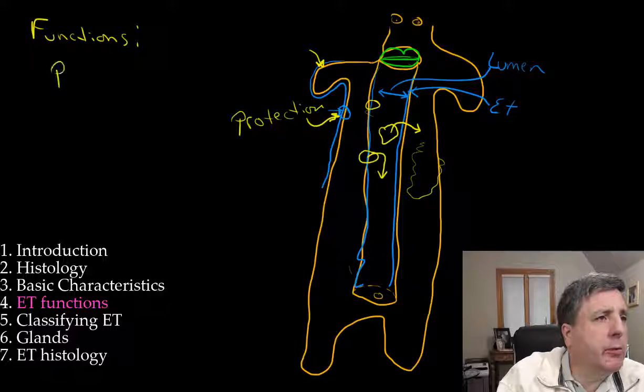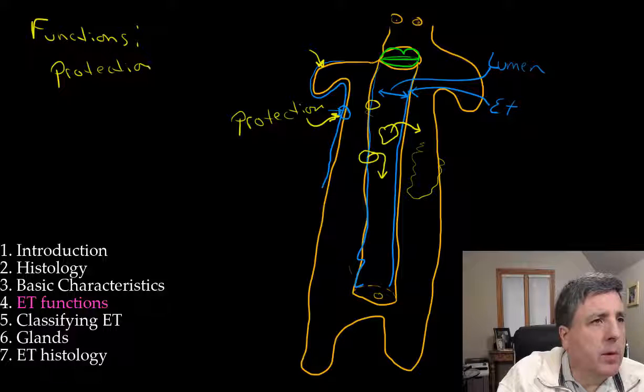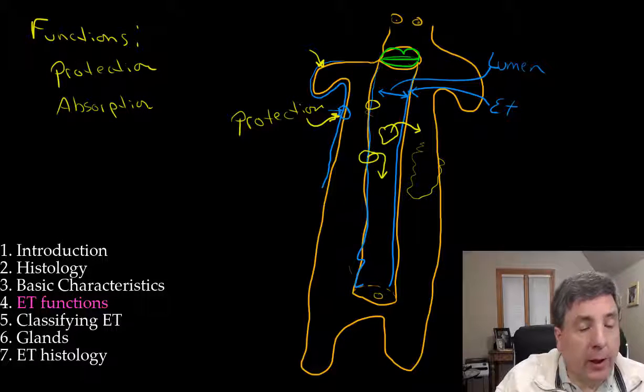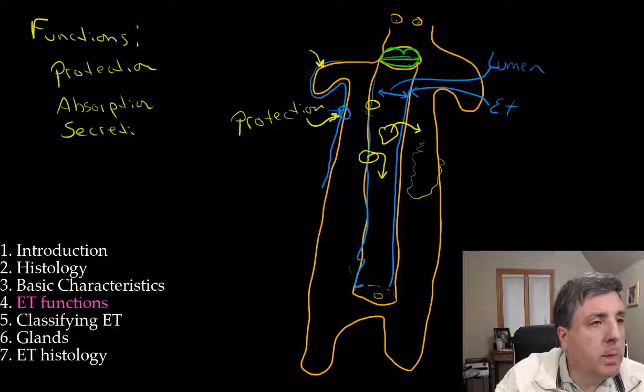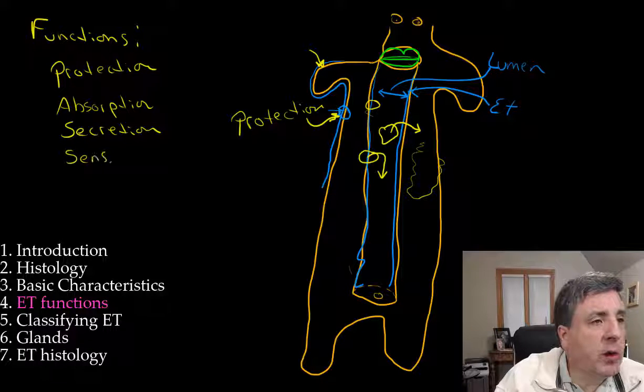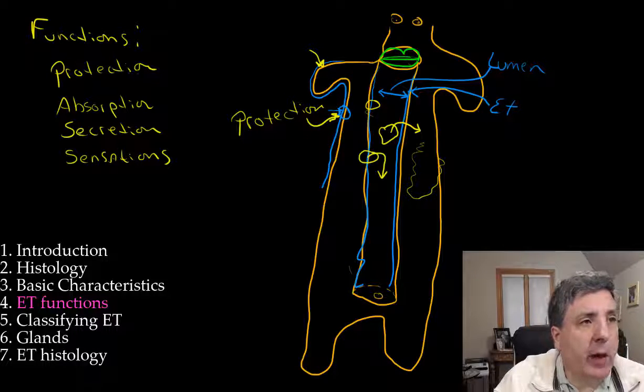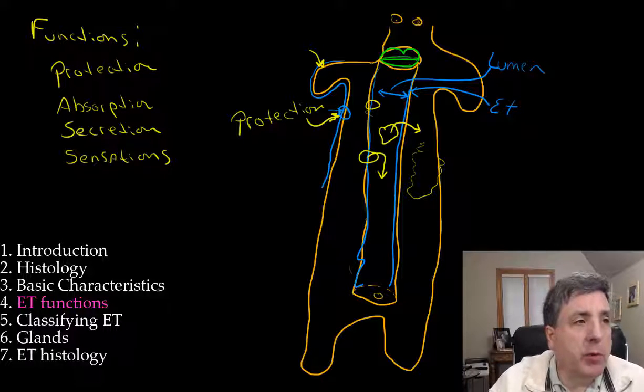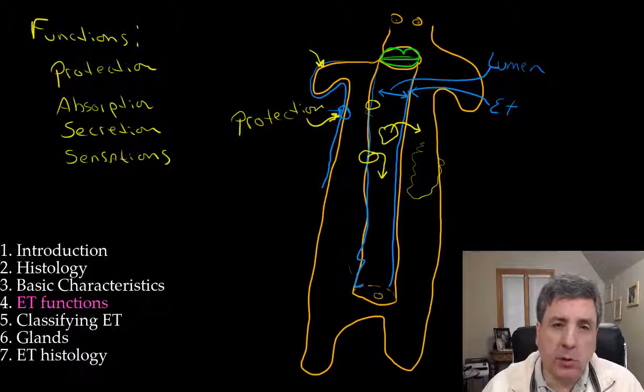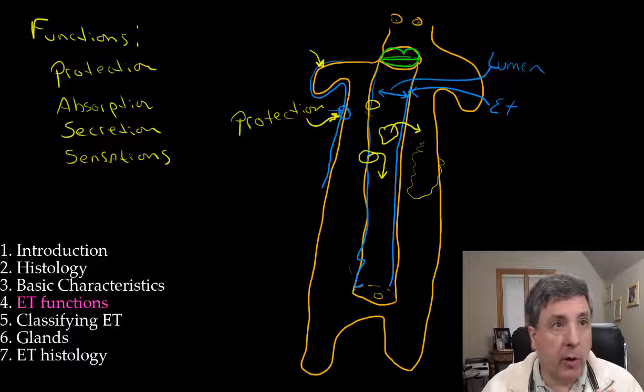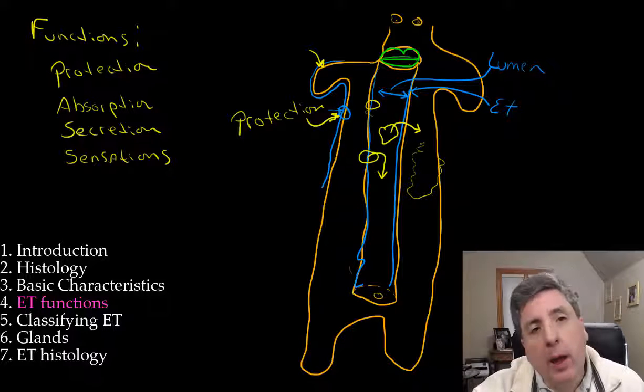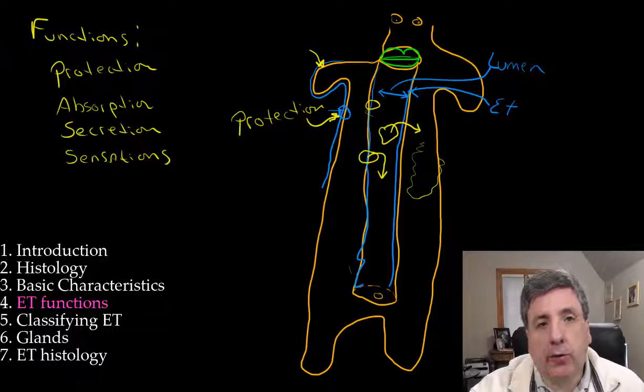So that's the key things that we're going to be looking at on functions. There's going to be protection, and you've got absorption which will be selectively permeable, secretion, and then you have sensations. Protection can be physical, abrasive, chemical, or biological. Absorption is semi-permeable. Secretions include mucus, hormones, digestive enzymes, sweat, a variety of different things. And you have the neurological component which is sensitive to various sensations. So the next one we're going to learn how to classify the different types of epithelial tissue.